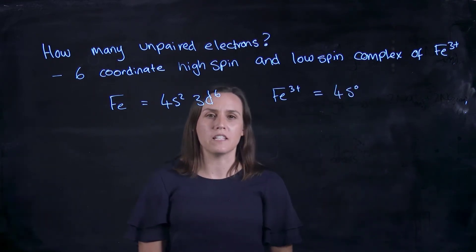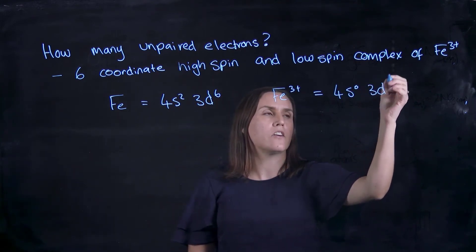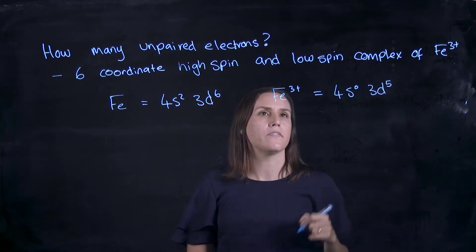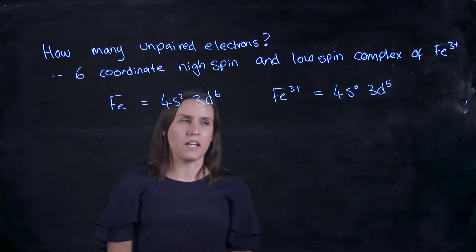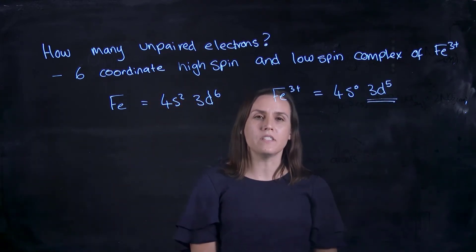So I can write 4s0 in there to indicate that. And then I'm going to take one from that 3d, so I'll come down to 3d5. So I've given up 3 electrons now. I'm now looking at 5 d electrons.